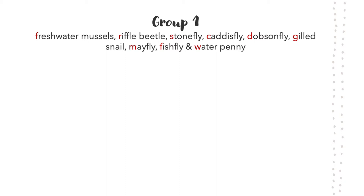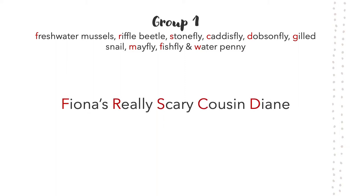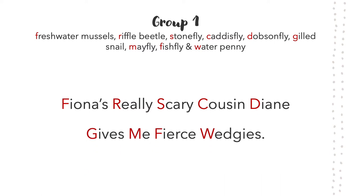To help you remember which macroinvertebrates belong to Group 1, we've come up with a mnemonic device: 'Fiona's really scary cousin, Diane, gives me fierce wedgies.' This represents freshwater mussels, riffle beetles, stoneflies, caddisflies, dobsonflies, the gilled snail, mayfly, fishfly, and water penny, all of which belong to Group 1.